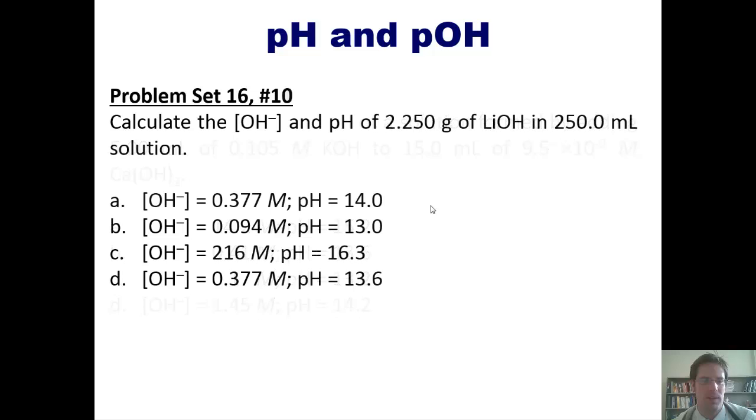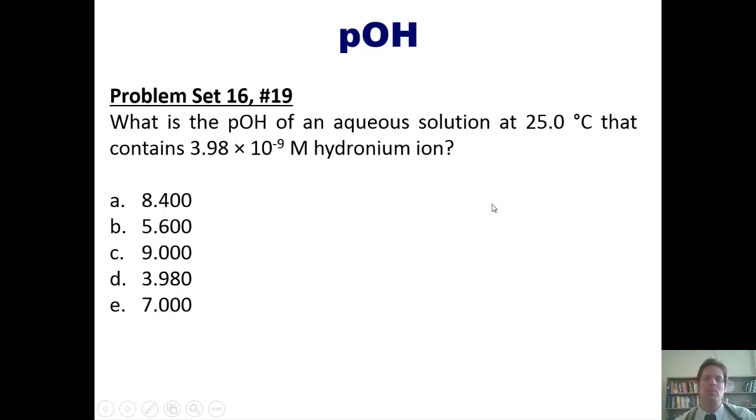And now our last question. Calculate the hydroxide ion concentration and pH of 2.25 grams of lithium hydroxide diluted in 250 milliliters solution. And lastly, what is the pOH of an aqueous solution at 25 degrees C that contains this concentration of hydronium? As always, you're welcome to click the link here if you like after attempting it on your own to see me do it for you on the board.